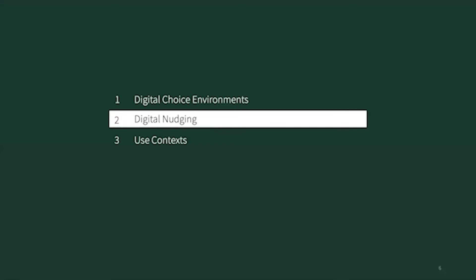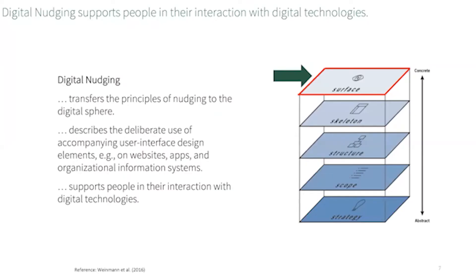Let's have a closer look at what digital nudges are and what they do. To put it simply, digital nudging transfers the principles of nudging to the digital sphere. Digital nudges are any user interface design element that utilizes or counteracts psychological effects with the goal of influencing users' decisions in a predetermined way, without forbidding any options, significantly changing economic incentives, or providing relevant argumentation. Just like in the general nudging approach, the goal is to alter elements of the decision environment so that psychological effects are used to shape behavior. The major difference is that the decision environment is now a digital one — for example, a website, a mobile app, or some sort of workplace software. The nudge is an element of the user interface in digital nudging.